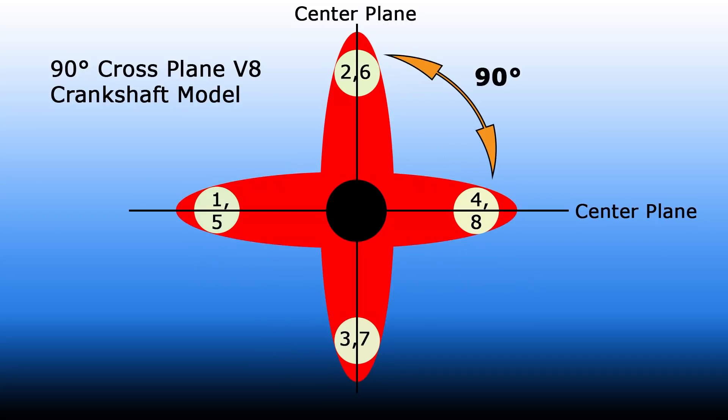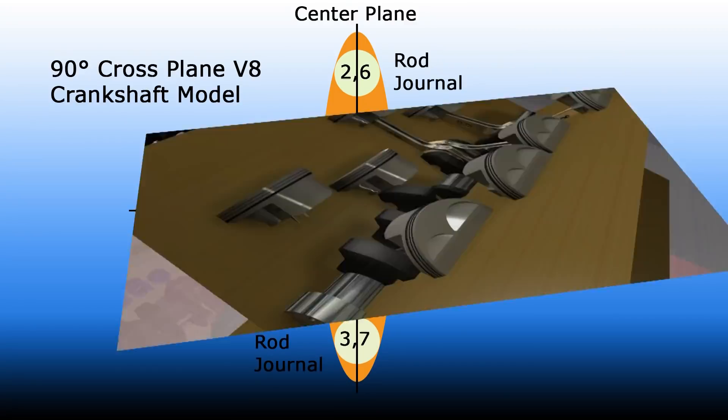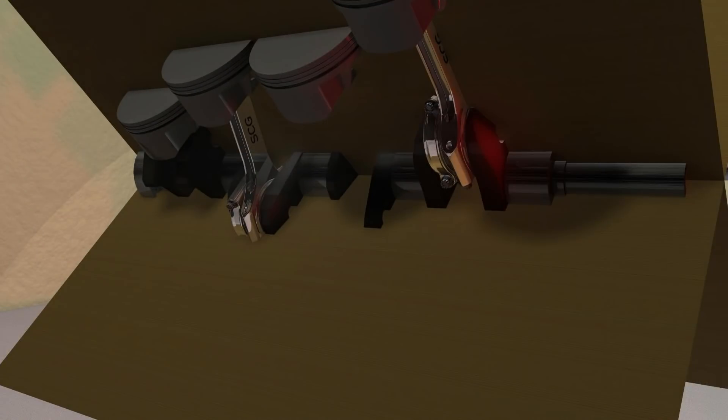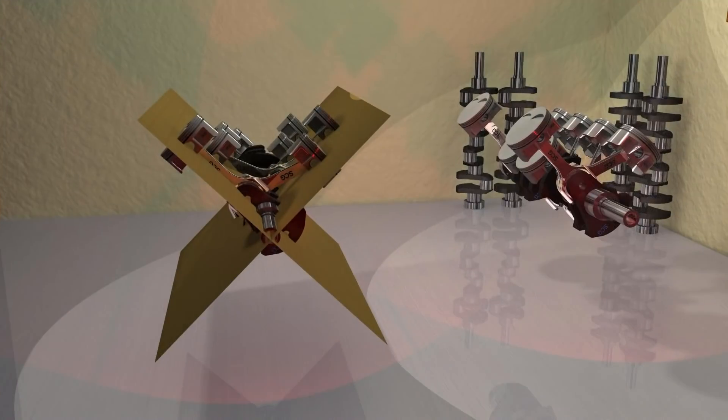And there are two planes at 90 degrees apart. If a thin piece of cardboard could be placed in these planes through the center of the rod journals and the crankshaft main journals, one can now see the X. The proper name should now just fall out of one's mouth: 90 degree cross plane crankshaft.